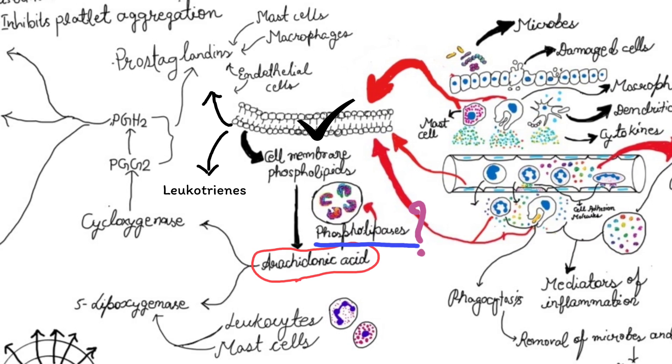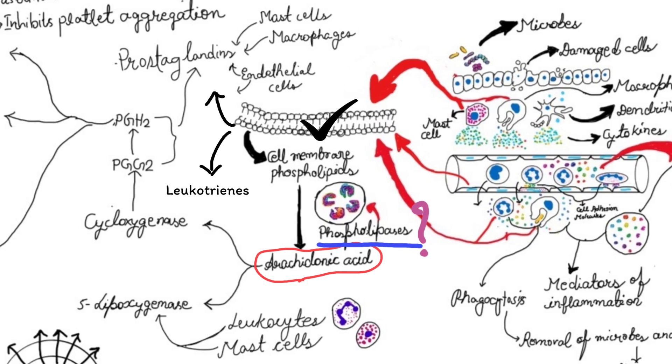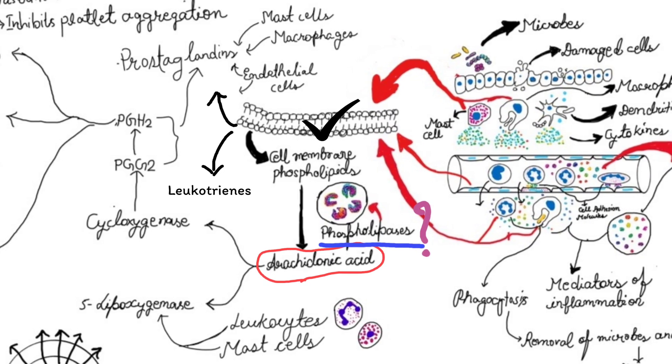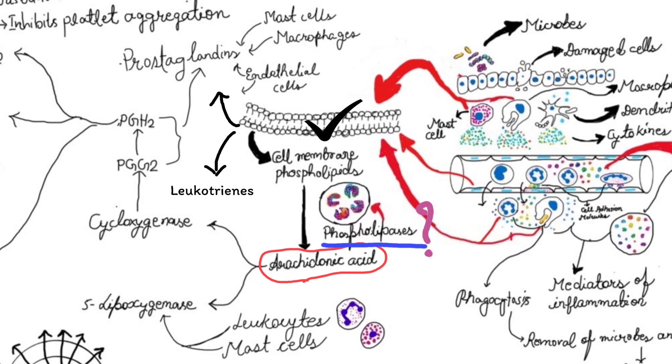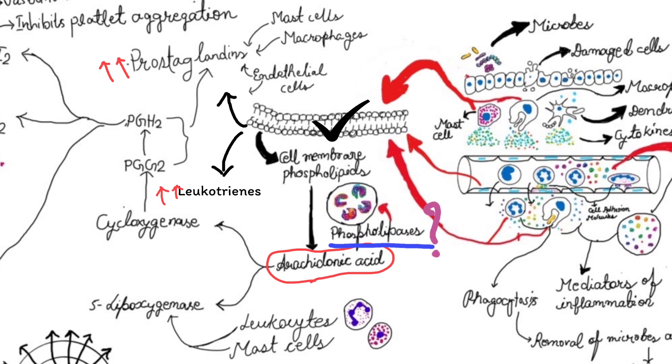How does phospholipase get activated? Due to several physical and chemical stimuli. This leads to increased production of prostaglandins and leukotrienes.